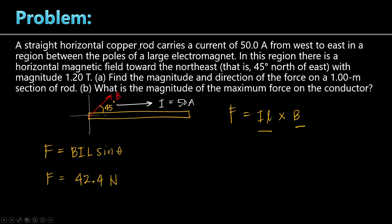What is the direction of this force? Using the right-hand rule, curl the four fingers of the right hand from the IL vector toward B. The thumb points toward you — along the positive Z axis. So the vector force is 42.4 Newtons along the positive Z axis. The conductor will move in that direction — forward, along the positive Z axis.